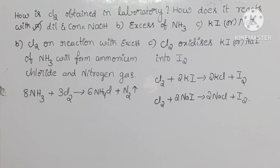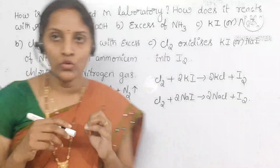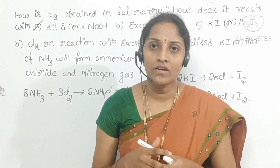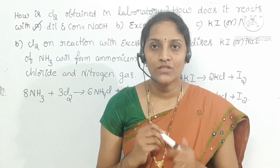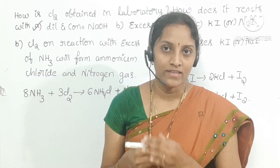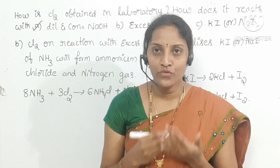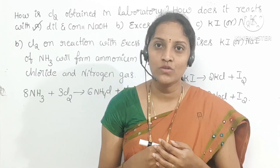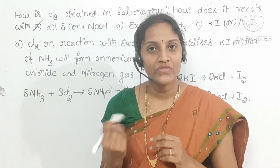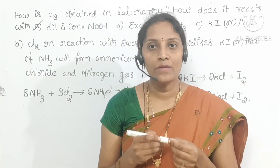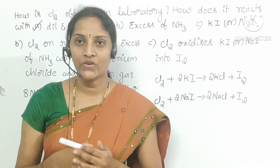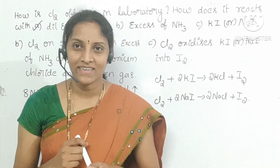These are the reactions: how chlorine reacts with NaOH under two conditions — diluted and concentrated — then excess of ammonia, and potassium iodide or sodium iodide. I hope you all understand. If you feel it is useful and informative, please subscribe, like, and share these videos. This question is helpful for your IP exams. Thanks for watching. We will meet in the next class.